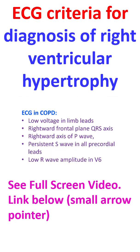In chronic obstructive pulmonary disease (COPD), ECG changes reflect the lower diaphragm from increased lung volume. Low voltage in limb leads, rightward frontal plane QRS axis — which could also be indeterminate — rightward axis of P wave, persistent S wave in all precordial leads, and low R wave amplitude in V6 are usual.